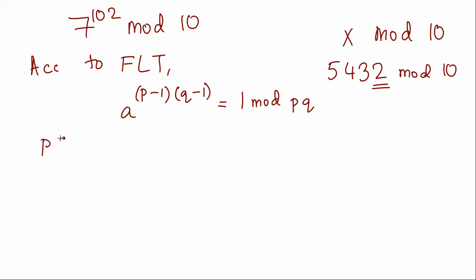In this case, if we say p = 2 and q = 5, we have pq = 10 and a = 7.